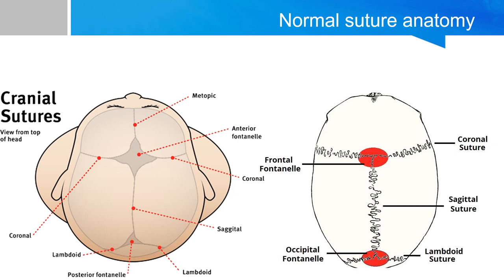When a suture closes and the skull bones join together too soon, the baby's head will stop growing in only that part of the skull. In other parts of the skull where the sutures have not joined together, the baby's head will have compensatory growth, and when that happens, the skull will have an abnormal shape.